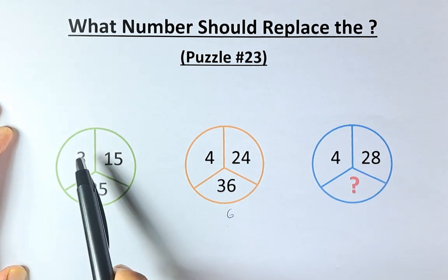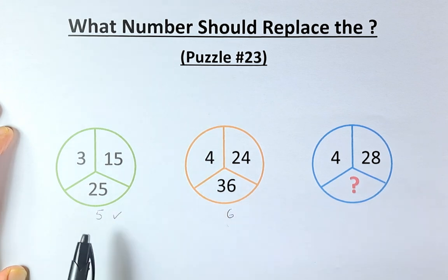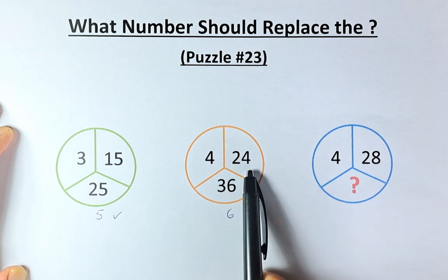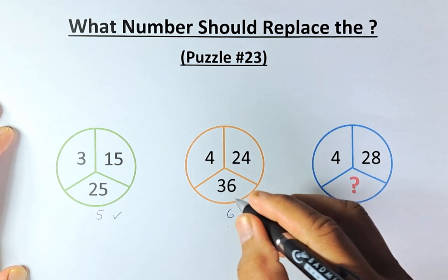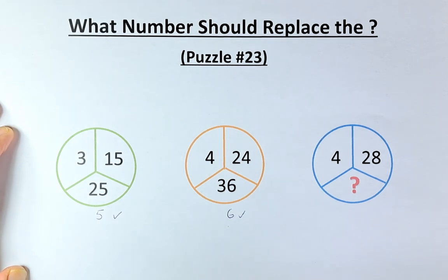So you take 15 divided by 3 will give you 5. That's why you square 5 that will give you 25. Same similarly, 24 divided by 4 gives you 6. And then you square the number is going to give you 36.